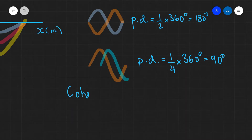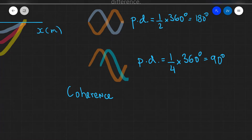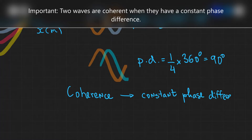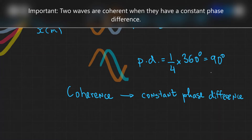Two waves are coherent if they have a constant phase difference. In the examples following this video, I'm going to be assuming that all of the waves are coherent. This means that the phase difference — whether it's zero, 180 degrees, or 90 degrees — does not change. In practice, the waves don't overtake each other at a variable rate. The rate is always fixed; the phase difference is always fixed.